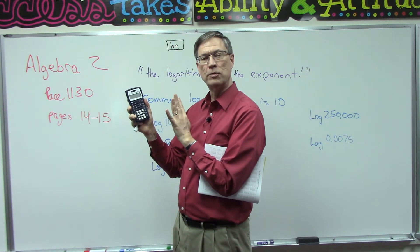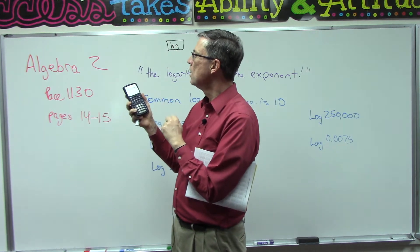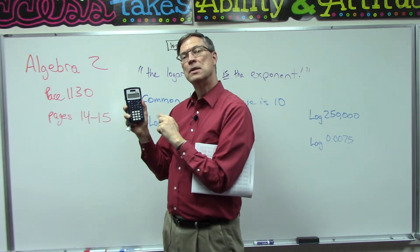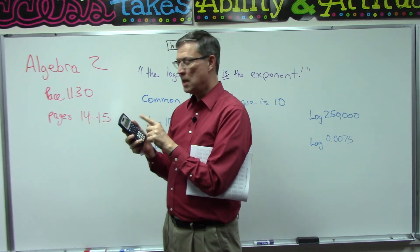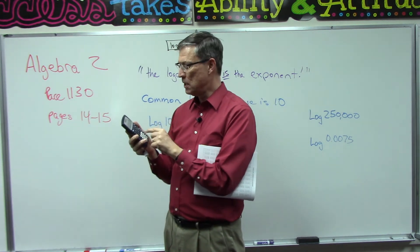Hit enter and it gives me the same answer, 0.9294. Actually gives me more digits but I'm just going to round it off to those four digits. Some calculators you have to put in the number first and then hit log and then it'll give you the answer.